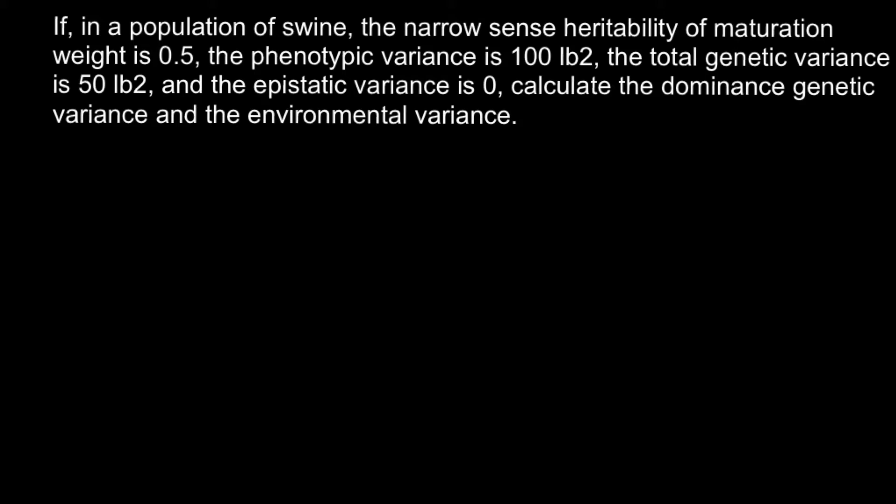If in a population of swine the narrow sense heritability of maturation weight is 0.5, the phenotypic variance is 100 pounds, the total genetic variance is 50 pounds, and the epistatic variance is 0, calculate the dominance genetic variance and the environmental variance.